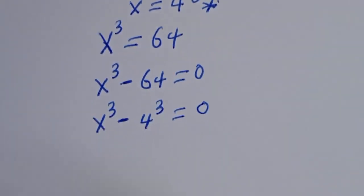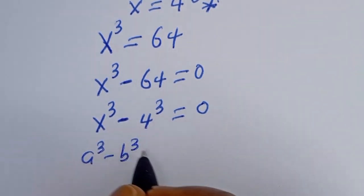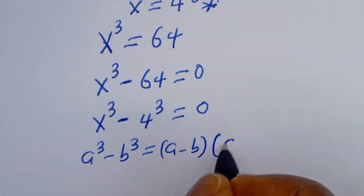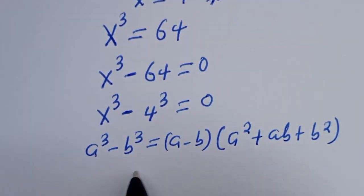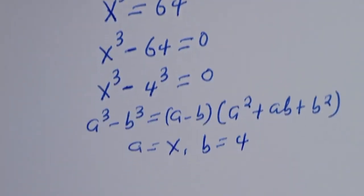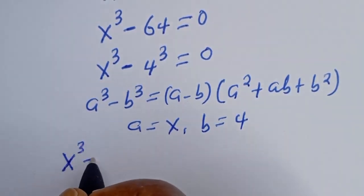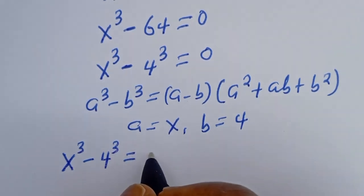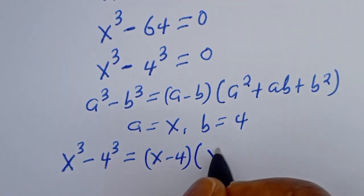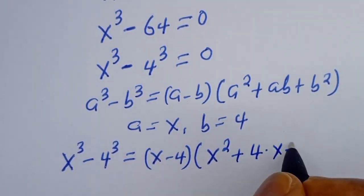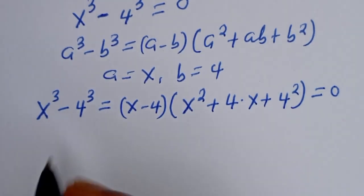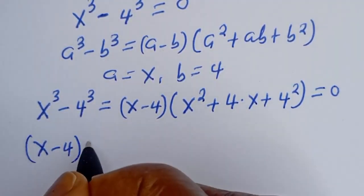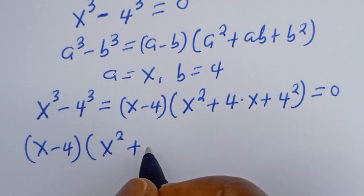Now if you have a³ minus b³, this is equal to (a − b)(a² + ab + b²). From this equation, a is equal to s and b is equal to 4. Substituting, we have s³ minus 4³ is equal to (s − 4)(s² + 4s + 4²) equal to zero.